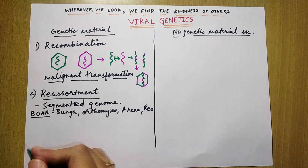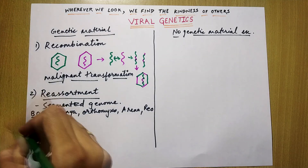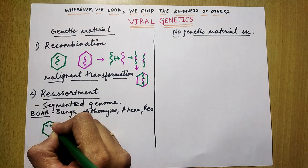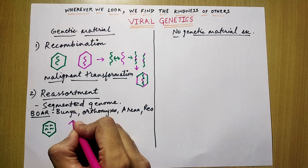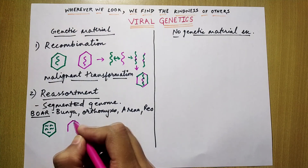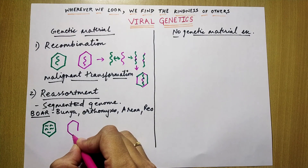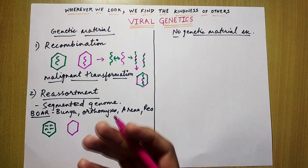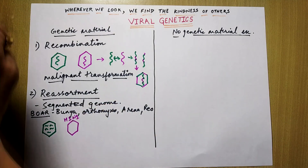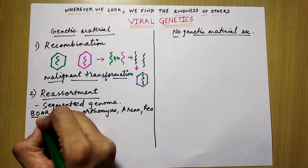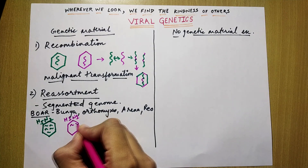Now what happens here is — let's draw the virus again. This is the outer protein capsid and the genetic material here is segmented, meaning there are many small particles. And there is another segmented virus. Both are of similar type. For example, if this is influenza, this one will also be influenza, but they will have certain different characteristics — the outer viral protein will be slightly different. Like, if this is H1N1, this can be H5N2 — just as an example. And this one also contains the segmented genomes.